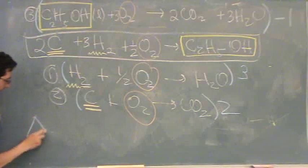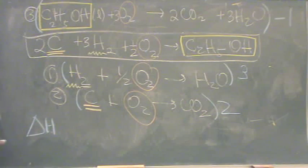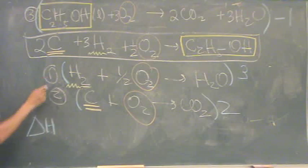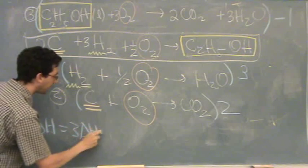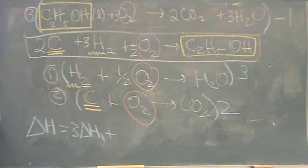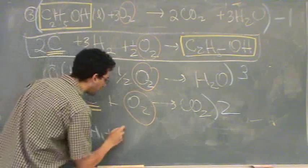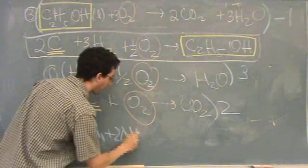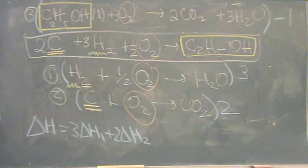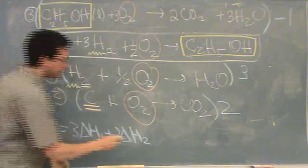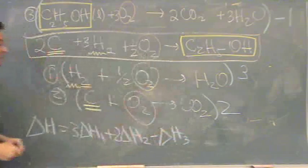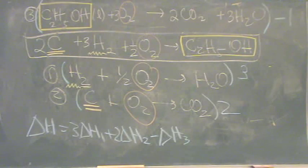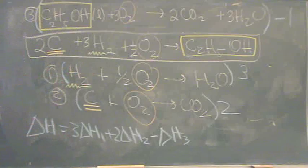So the answer, delta H for the overall reaction, is delta H1 times 3. 3 times delta H1 plus 2 times delta H2 minus delta H3. And numerically, you can calculate that out for that reaction. You just plug in the numbers. That's part B.